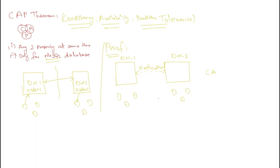Here, C represents consistency. Whatever a user writes or updates in data node 1 — let's say data called customer 1 — this data is replicated to data node 2 because the network is not partitioned. So users from the other region will get the same data, meaning it's consistent. And whenever a user tries to read or write from the data nodes, the request will be processed, so it's available. Therefore here you can achieve consistency and availability, but not partition tolerance.